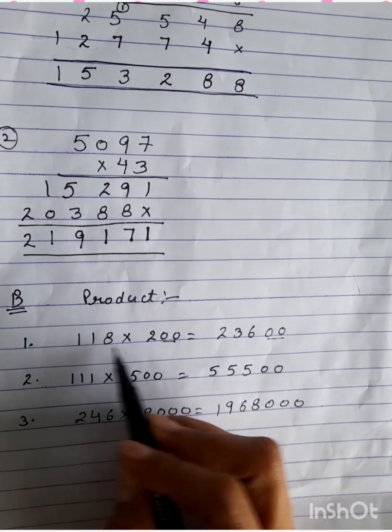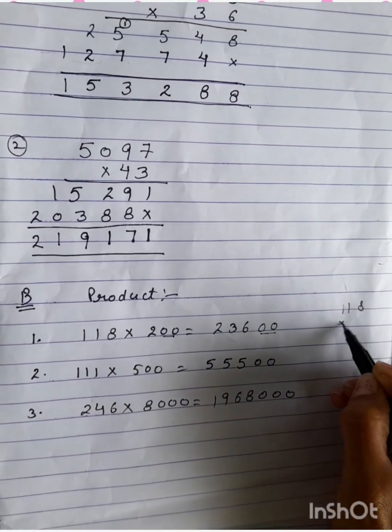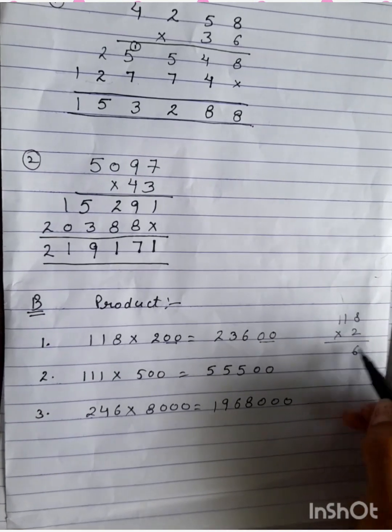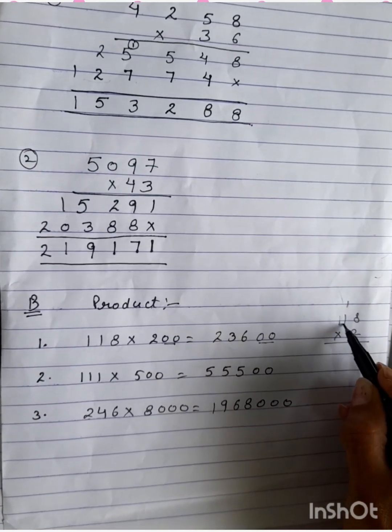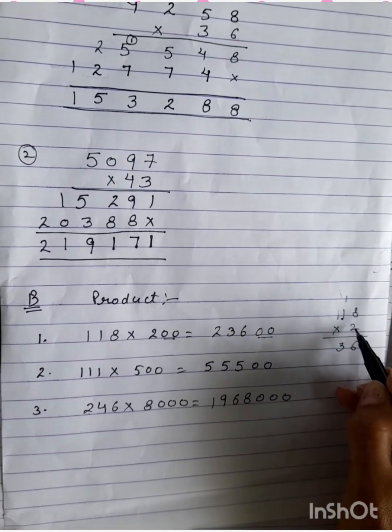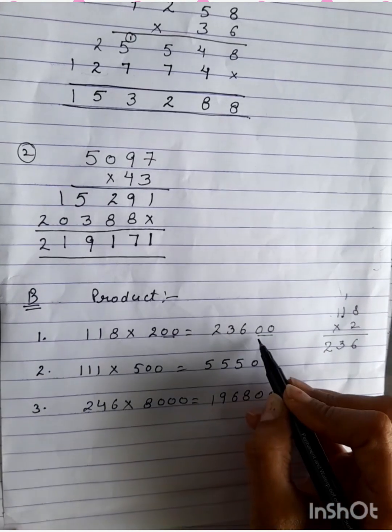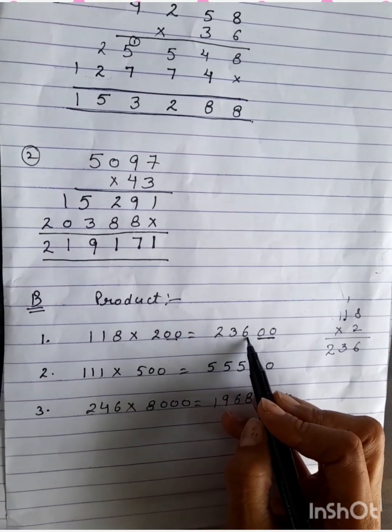Don't go for the long calculations. Just count the zeros with multiplicand and multiplier. Here are 2 zeros. I have written them as is. Then multiply 118 by 2. So 2 times 8 is 16, 1 carry. 2 times 1 is 2 plus 1 is 3. 2 times 1 is 2. So in front of these zeros I have written 236.